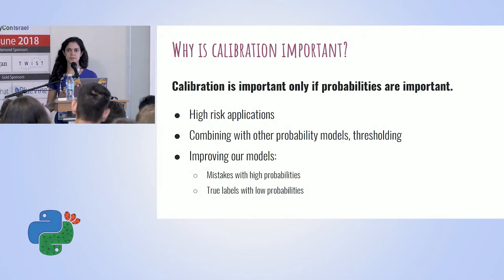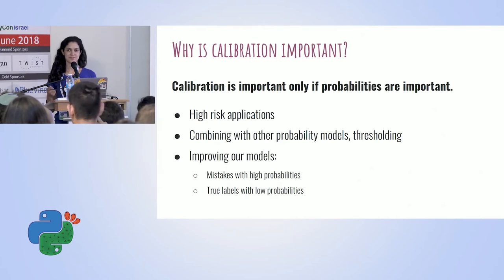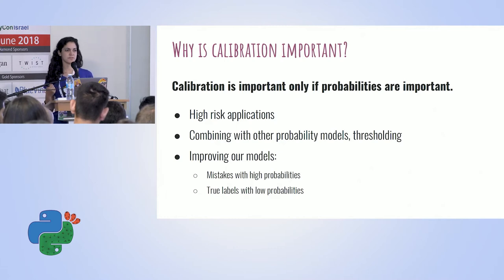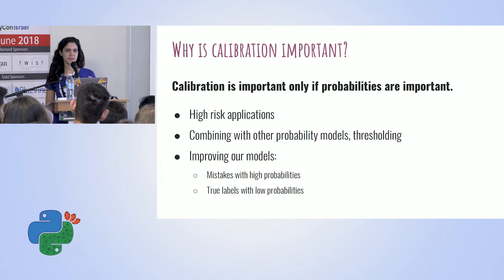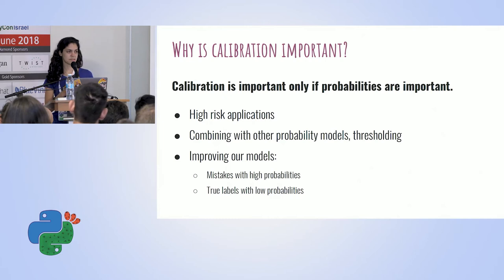The question becomes: when should we care about probabilities? The first example is high-risk applications. If we're building a model to help a doctor decide whether a patient is suffering from a specific condition or needs a specific medicine, we might want our model to indicate when it's confident or not in its prediction. The doctor can then say: the model thinks the patient has this condition, but with very low probability, so I need to take that into account when making the final decision.